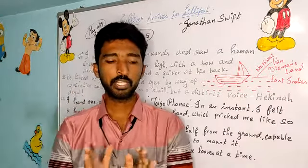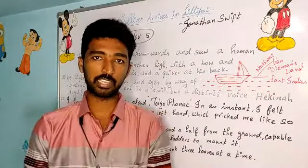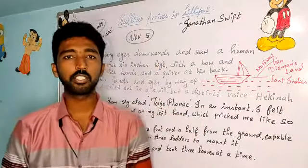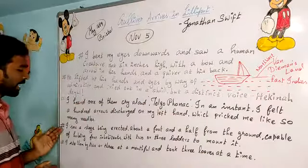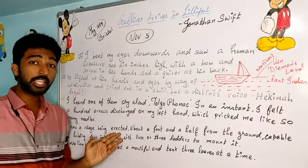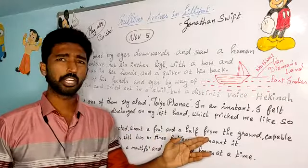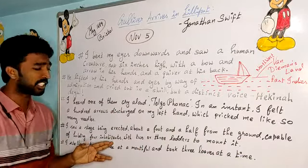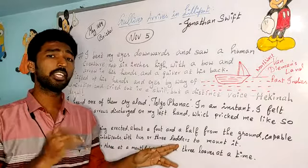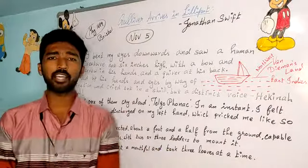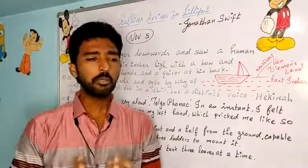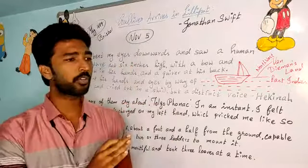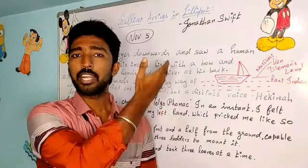When the people around him observed that Gulliver was quiet, they shot no arrows. But he could hear a noise — the people were increasing in numbers. He saw a stage being erected, about a foot and a half from the ground, capable of holding four inhabitants, with two or three ladders to mount it. One of their leaders stood on it and made a very long speech, though Gulliver couldn't understand anything. Shortly after his speech, nearly 40 to 50 people came to the left side of his head and cut those strings fastened to the ground.